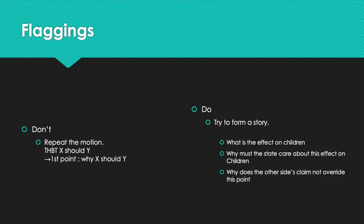When you try to signpost, I wouldn't advise people to say: 'firstly, the analysis on the characteristic of children; secondly, analysis on the characteristic of parents.' That's not how I would do it. I would say that there is a strong story of why you need to support this motion — that is how the motion affects a certain group, why people must care about it, and why the other side's analysis does not overwrite that.